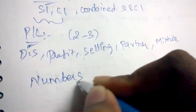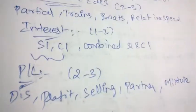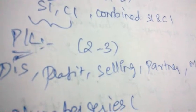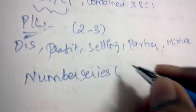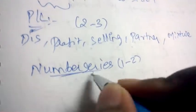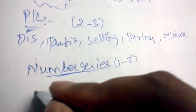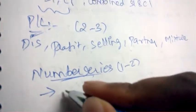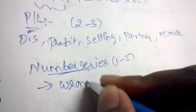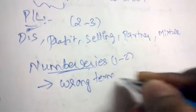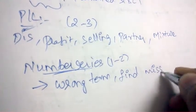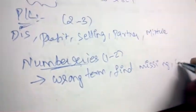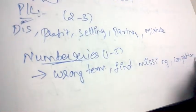Coming to Number Series, they'll just be asking 1 to 2 questions — it has less weightage. The topics are finding the wrong terms, finding the missing terms, and completion of the series.